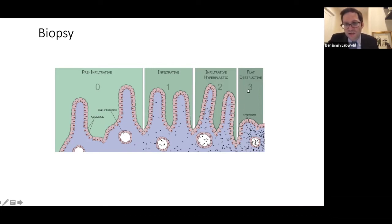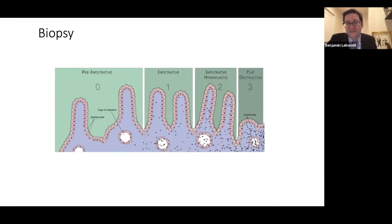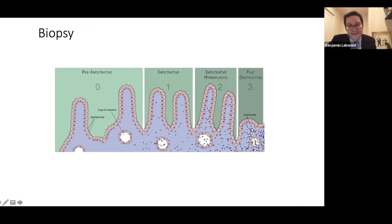In people with celiac disease, we call this so-called MARSH-3 — that's the characteristic that makes us most certain someone has celiac. There is a flattening of those folds; we call it villus atrophy. Villus is a single finger-like projection, and atrophy means it's basically shrinking or not of normal size, so it becomes flat. It's flat because it is being attacked by white blood cells called lymphocytes that are triggered by gluten. They see gluten as a threat and cause inflammation and damage there.